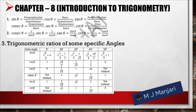Chapter number 8: Introduction to Trigonometry. First we have sin θ = perpendicular/hypotenuse, cos θ = base/hypotenuse, tan θ = perpendicular/base, cosec θ = hypotenuse/perpendicular, sec θ = hypotenuse/base, and cot θ = base/perpendicular. Also, cosec θ = 1/sin θ, sec θ = 1/cos θ, tan θ = sin θ/cos θ, and cot θ = 1/tan θ = cos θ/sin θ.